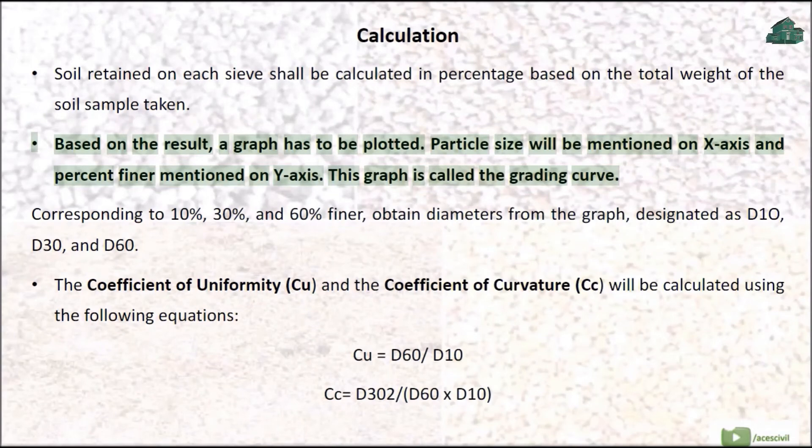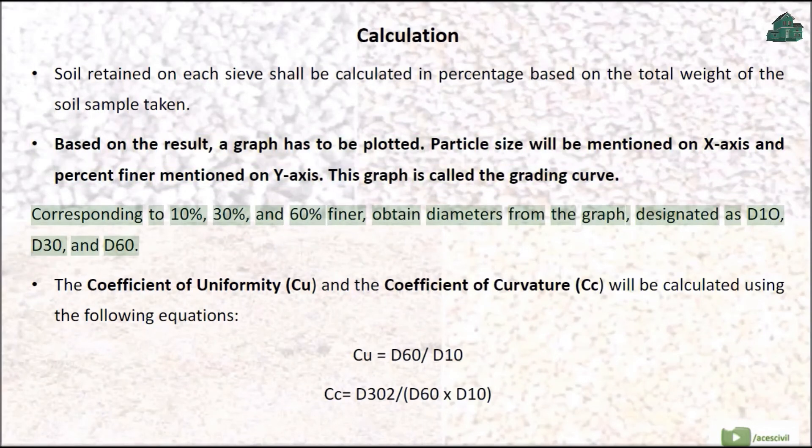Particle size will be mentioned on x-axis and percent finer mentioned on y-axis. This graph is called the grading curve. Corresponding to 10%, 30%, and 60% finer, obtain diameters from the graph designated as D10, D30, and D60.